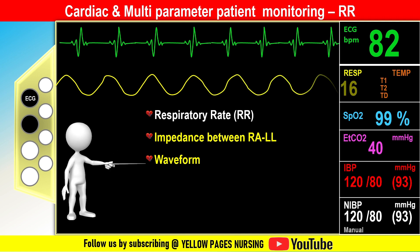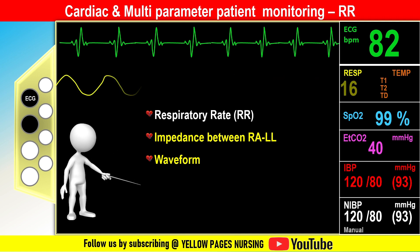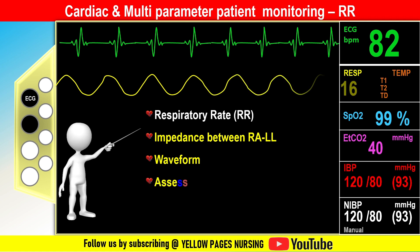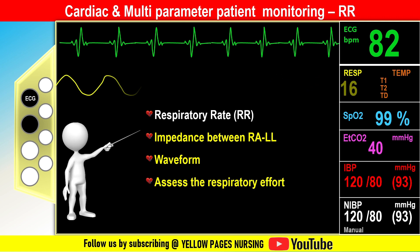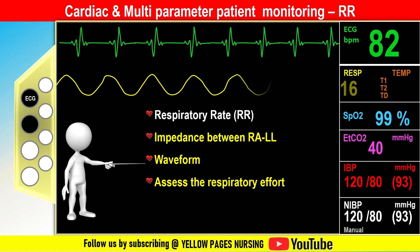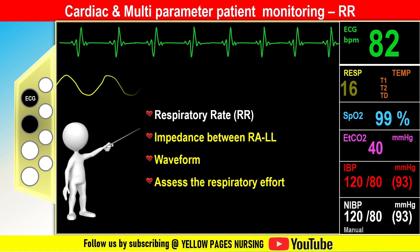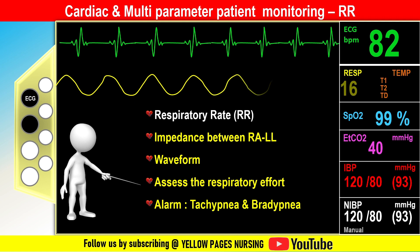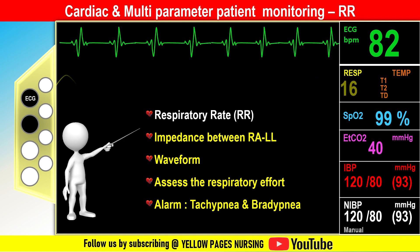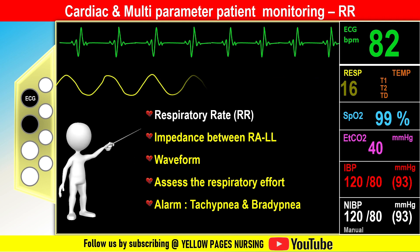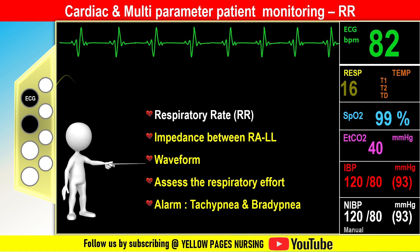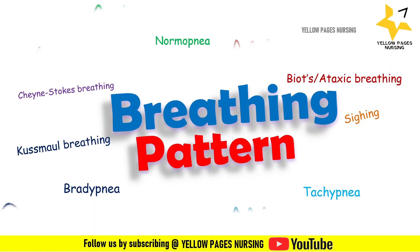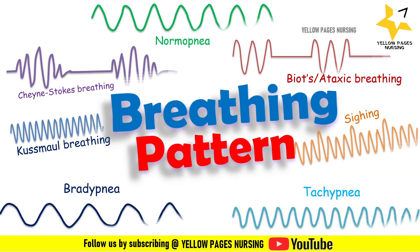The displayed waveform of respiration helps to identify respiratory abnormalities or abnormal breathing patterns. Nursing considerations include assessing the patient's respiratory effort and pattern, recognizing changes in respiratory rate such as tachypnea or bradypnea and reporting promptly, and considering factors like pain, anxiety, or respiratory conditions when interpreting respiratory rate.